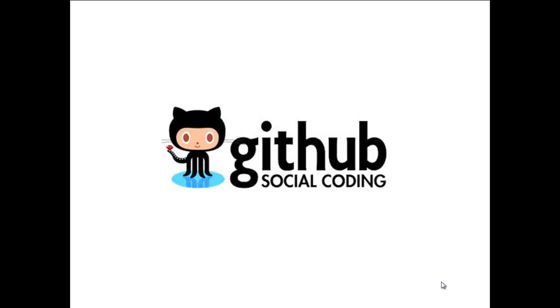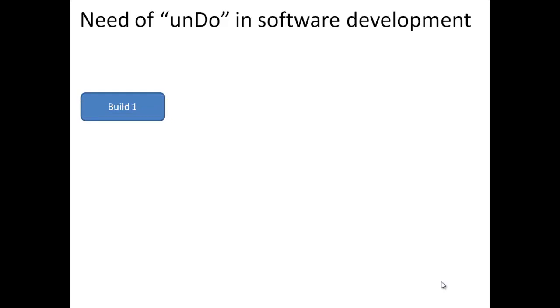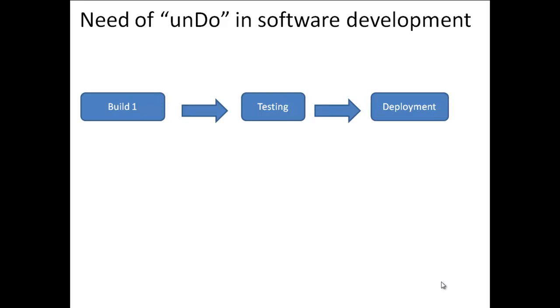Before we dive into Git or GitHub, we first need to understand the need for 'undo' in software development, specifically in the development life cycle. As a developer, I have implemented a functionality, generated a build, tested it, and it's working fine, so I've sent it to the deployment server and deployed it.